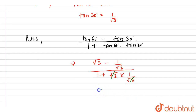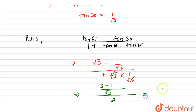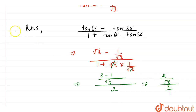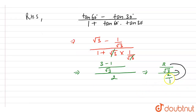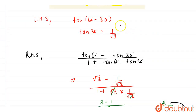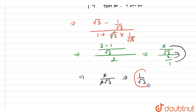At the numerator, taking LCM we get root 3 and root 3 times root 3 is 3, so it becomes 3 minus 1, divided by 1 plus 1 which is 2. Solving this gives 2 by root 3 at the numerator — that is 3 minus 1 equals 2 — over 2. The 2 cancels with 2 and we are left with 1 by root 3. Now we can see that at LHS we have 1 by root 3 and at RHS it is also 1 by root 3. Hence LHS equals RHS, and this is our final answer.